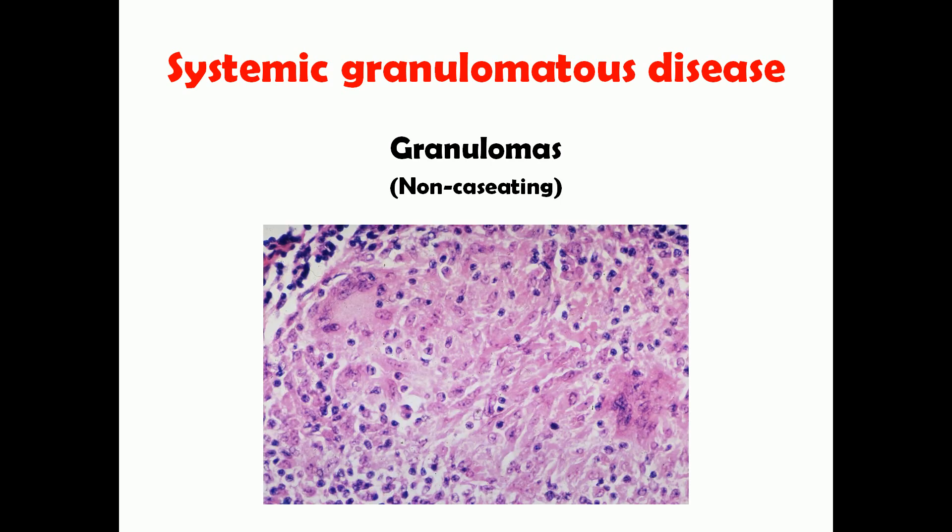In this microscopic picture of a granuloma, you can see multiple cells that look like epithelium dispersed throughout the slide — these are actually activated macrophages known as epithelioid cells. You can also see a large cell with multiple nuclei at about the 10 o'clock position; that is a multinucleated giant cell. These are the main features of granulomas.